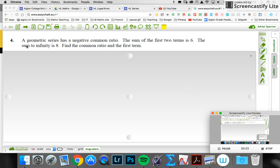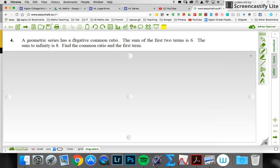Here we have a high-level question: a geometric series has a negative common ratio. The sum of the first two terms is six. Sum to infinity is eight. Find the common ratio and the first term.